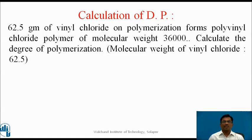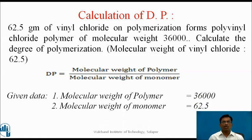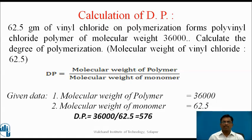Second example: 62.5 grams of vinyl chloride on polymerization forms a polyvinyl chloride polymer of molecular weight 36,000. Calculate the degree of polymerization. Given: molecular weight of vinyl chloride = 62.5. Using dp = molecular weight of polymer / molecular weight of monomer, dp = 36,000 / 62.5 = 576.